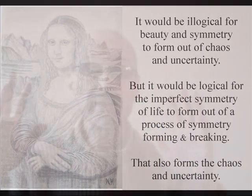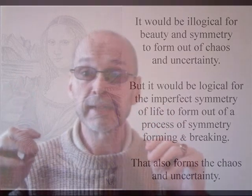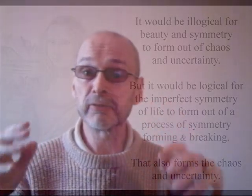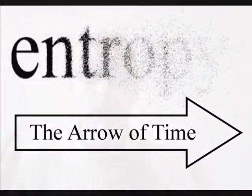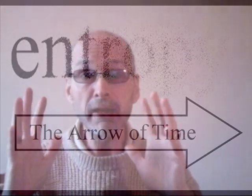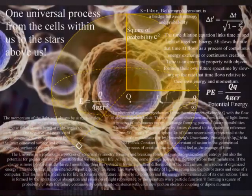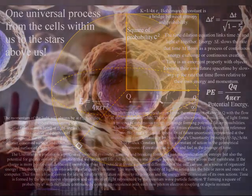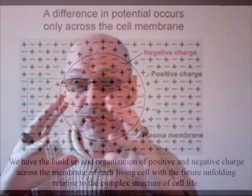There is a dynamic geometry that can give us this, and that is a process of symmetry forming and breaking. Such a process could form the potential for entropy or disorganization, with a potential for ever greater symmetry formation that we see in the complexity and diversity of cell life.